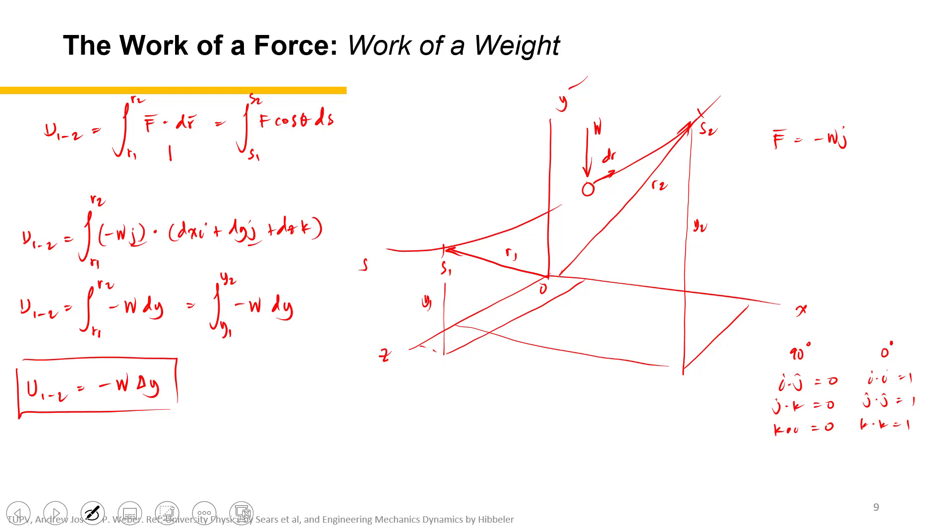Because it depends on the displacement, the delta y. If the displacement delta y is positive—say this is positive—then the work is negative. It means that the object is moving upward or is displaced apart. But since the weight is always downward and they are opposing, then the work is negative.